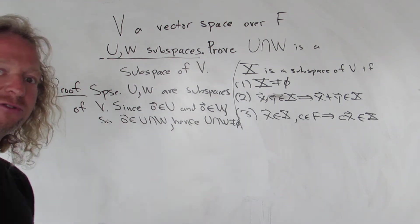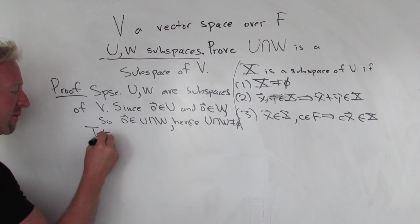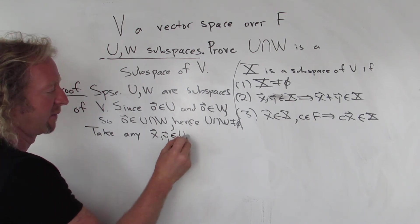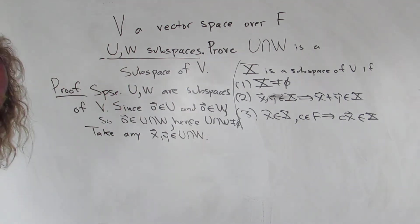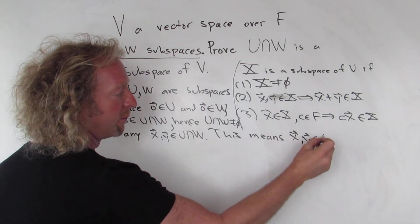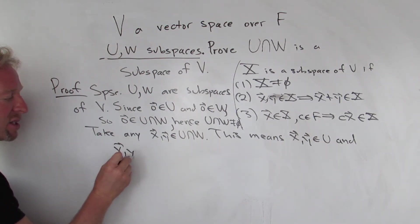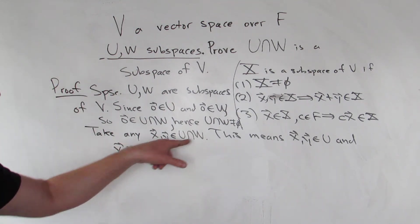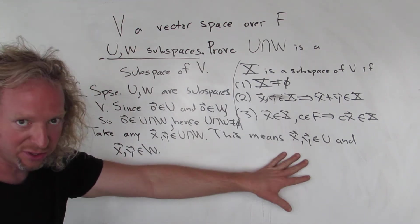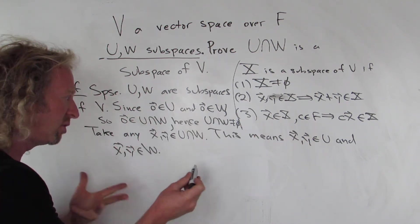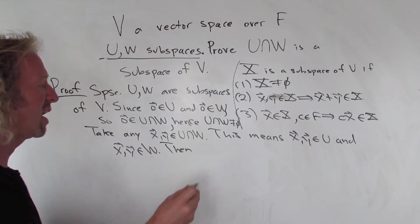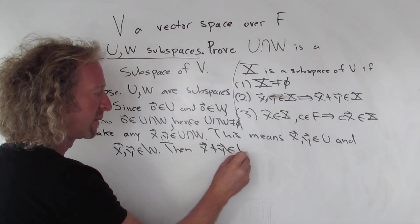Now we have to show that the intersection is closed under vector addition. Take any vectors X and Y in the intersection. What does it mean to be in the intersection? It means that X and Y are in U, and X and Y are in W. Since U is a subspace and it's closed under vector addition, then X plus Y is in U.